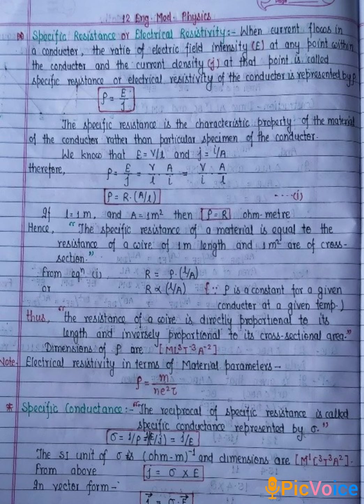Rho is equal to M by NE²τ, where M is the mass of free electron, N is number per unit volume of free electrons, E is charge of the electron, and τ is the relaxation time.